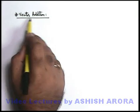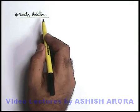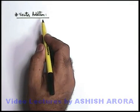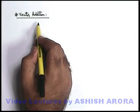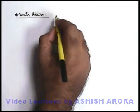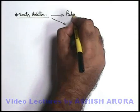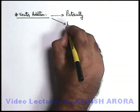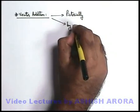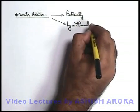Now we'll study vector addition. As we've studied in vector representation, vectors can be represented pictorially or mathematically. In the same manner, vector addition can be done in two ways: one is pictorially, and the other is by mathematical rules.